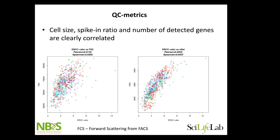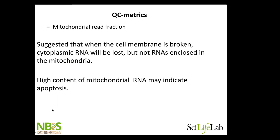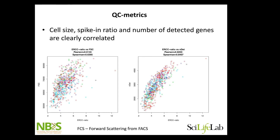We need to keep in mind that a lot of these different QC metrics correlate. Here it's plotted versus forward scattering in FACS. The ratio of mRNA to spike-in goes up — larger cells have more mRNA and less spike-in, while smaller cells have less. Forward scattering is not a perfect measure of cell size, but it's good to keep in mind that if you have varying cell sizes, you'll likely have varying values in number of detected genes, number of reads, spike-in ratios, and many of these measures.